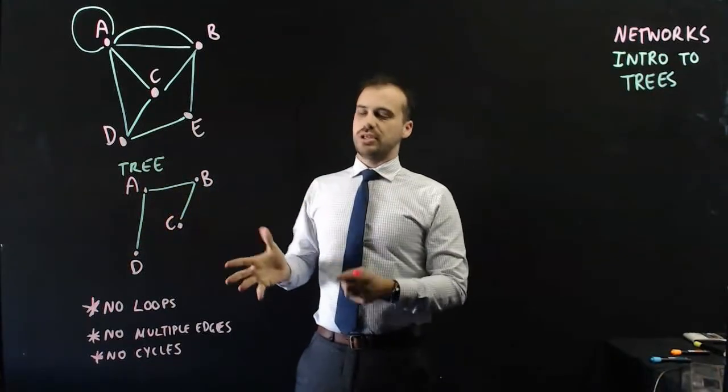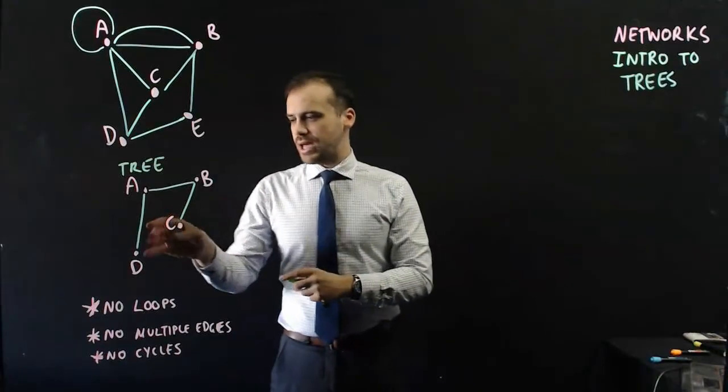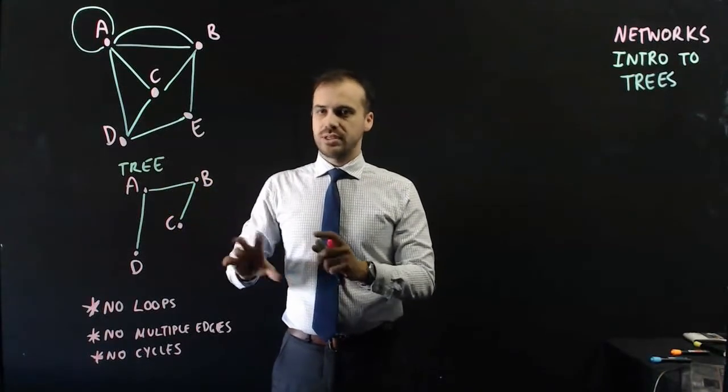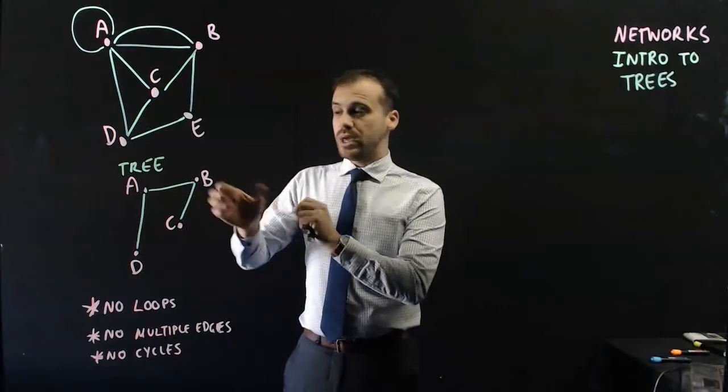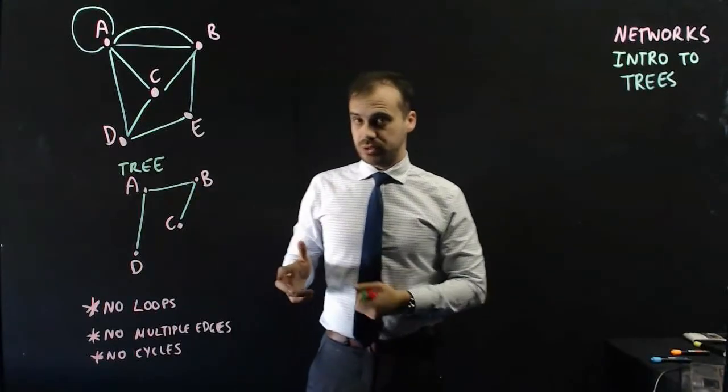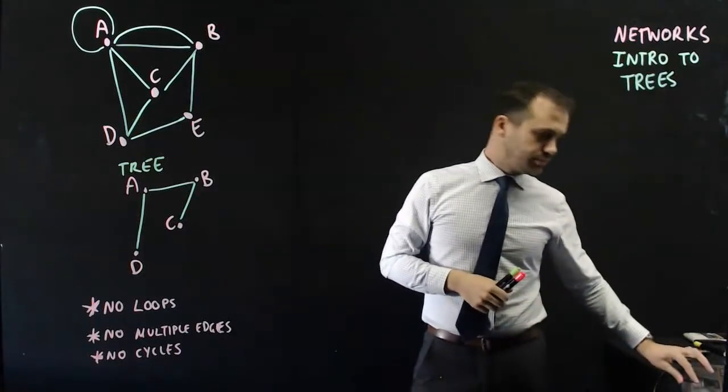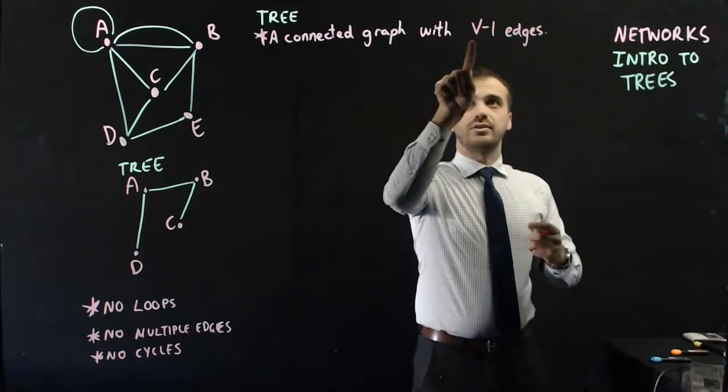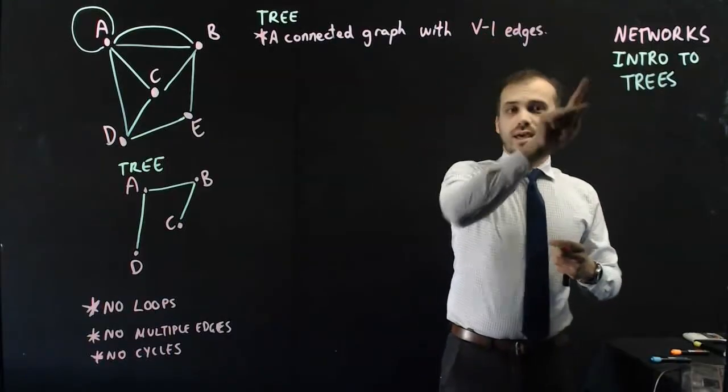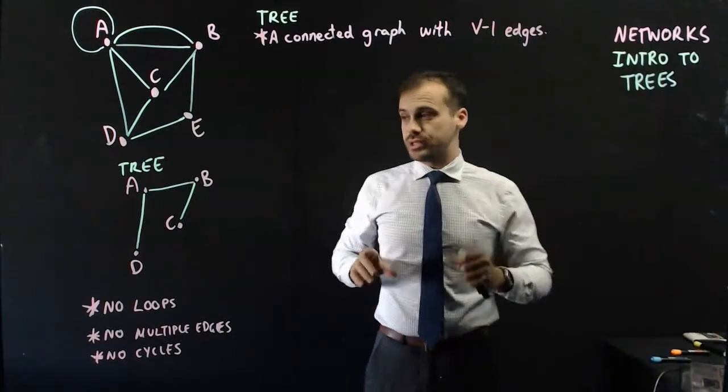Now a tree is a connection between vertices using as few edges as possible. And you'll know that you've drawn a tree if you have done the following: a connected graph with V minus one edges. That is what a tree is.